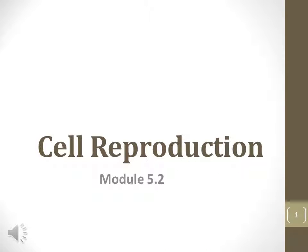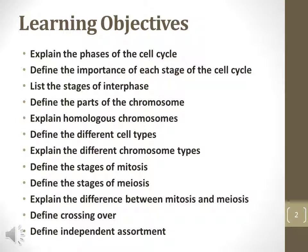This is the second narrated presentation for Biology 101, Module 5, Cell Reproduction. The details of two types of cellular division, mitosis and meiosis, are discussed in this presentation.